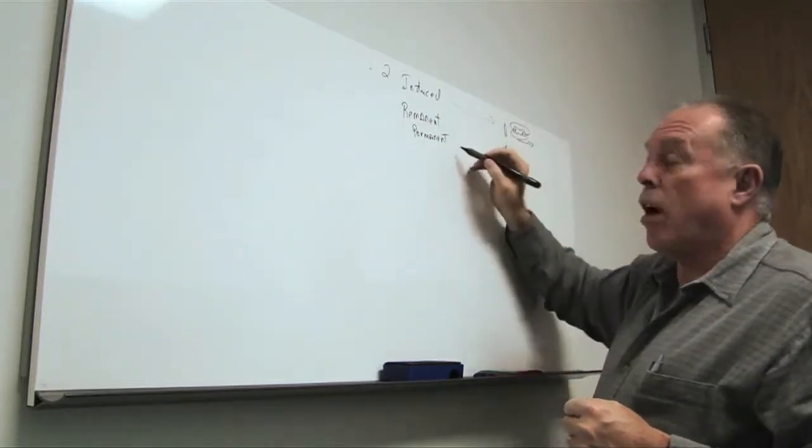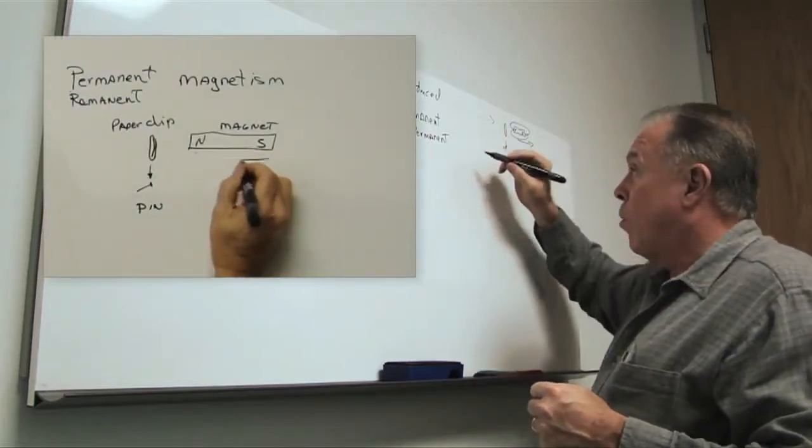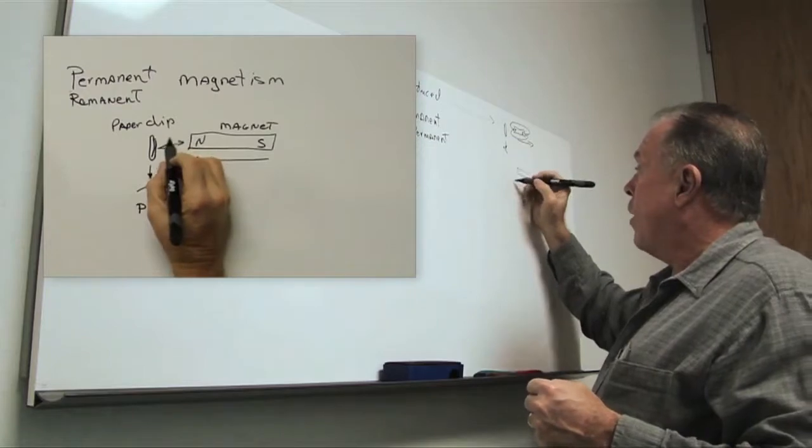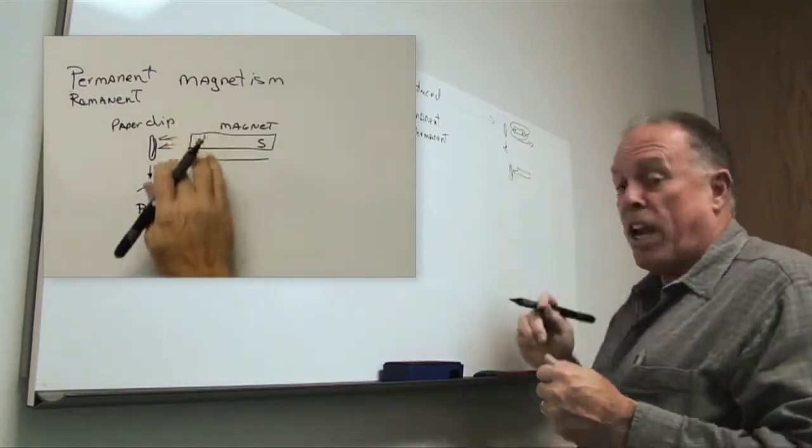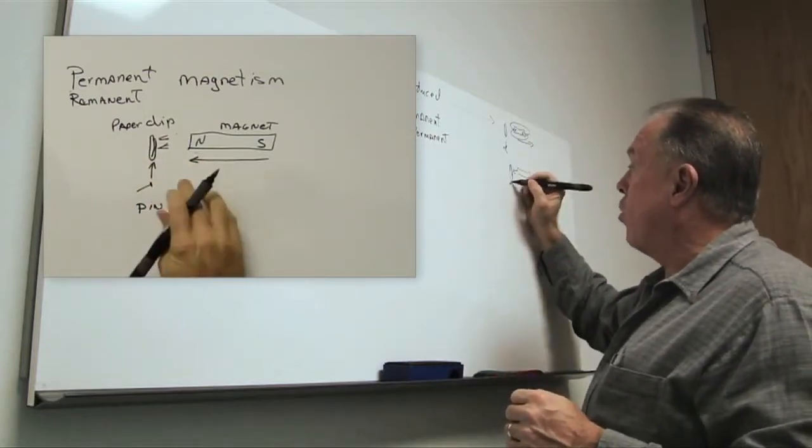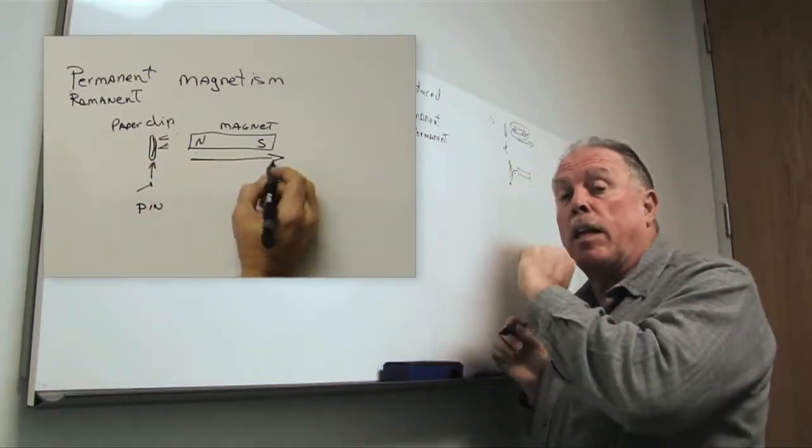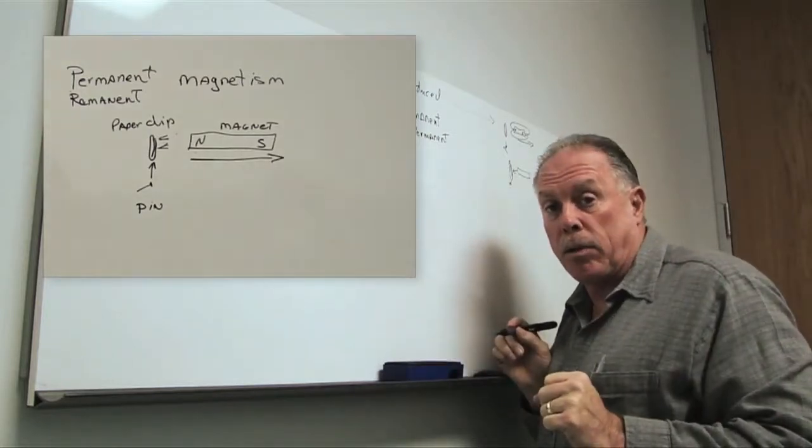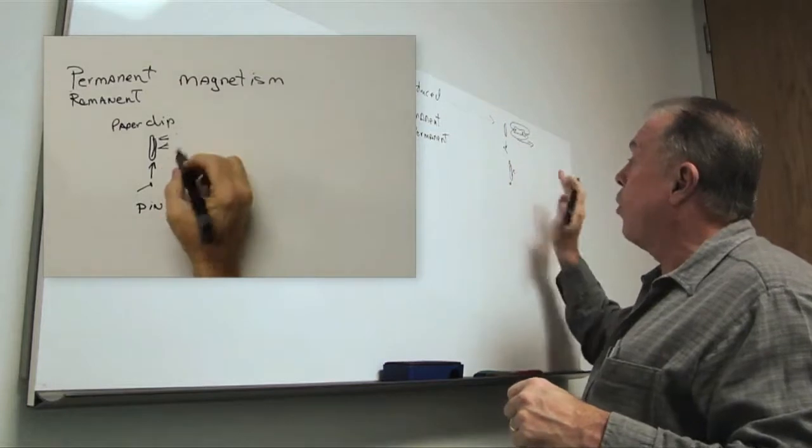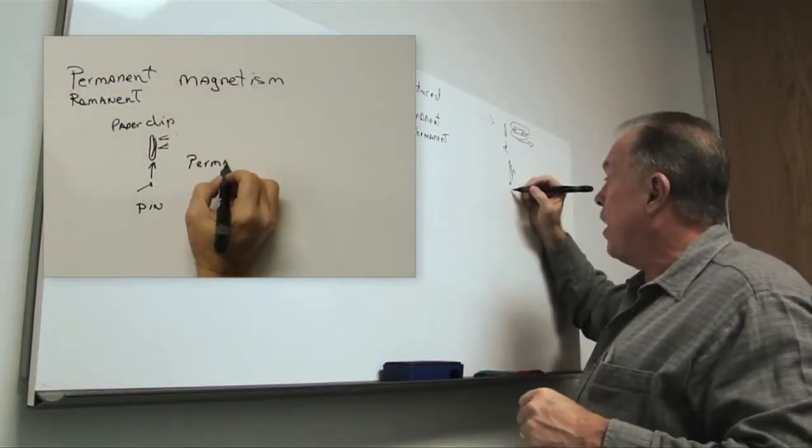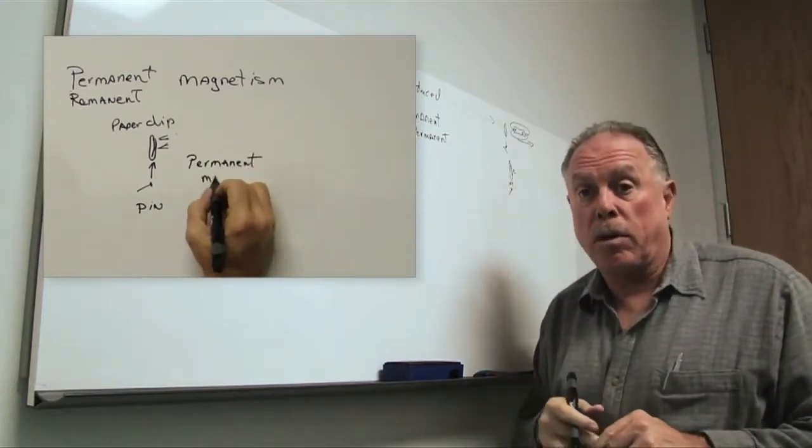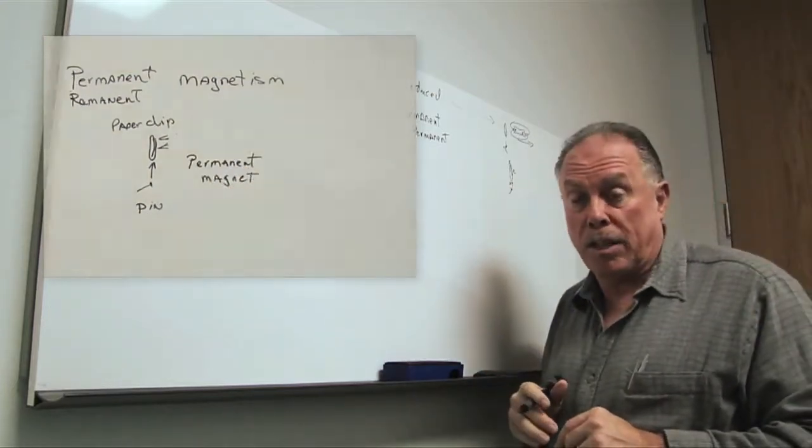Then we also have remnant or permanent magnetism. Remnant or permanent magnetism means that we have a magnet and we have a paper clip and we stroke the paper clip on the magnet and it becomes its own magnet. So now we have permanently magnetized the paper clip. It becomes a magnet all of its own and even if we pull the magnet away, a pin will still be attracted to the paper clip. It now has permanent or remnant magnetism.